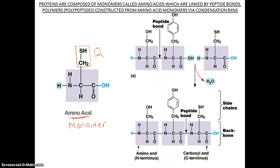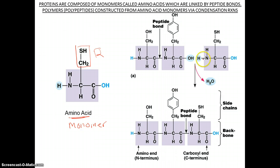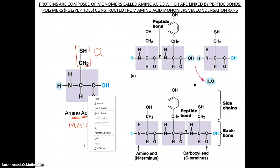How does an amino acid make a protein? Well, when you have more than one amino acid, they form a bond called a peptide bond. As we talked about in the other screencast, dehydration or condensation forms bonds. So when you remove a water molecule — a hydroxide ion from a carboxyl group and one from the amino group — we form a bond between that carbon and the nitrogen. With three amino acids forming a peptide bond, we call this a polypeptide.